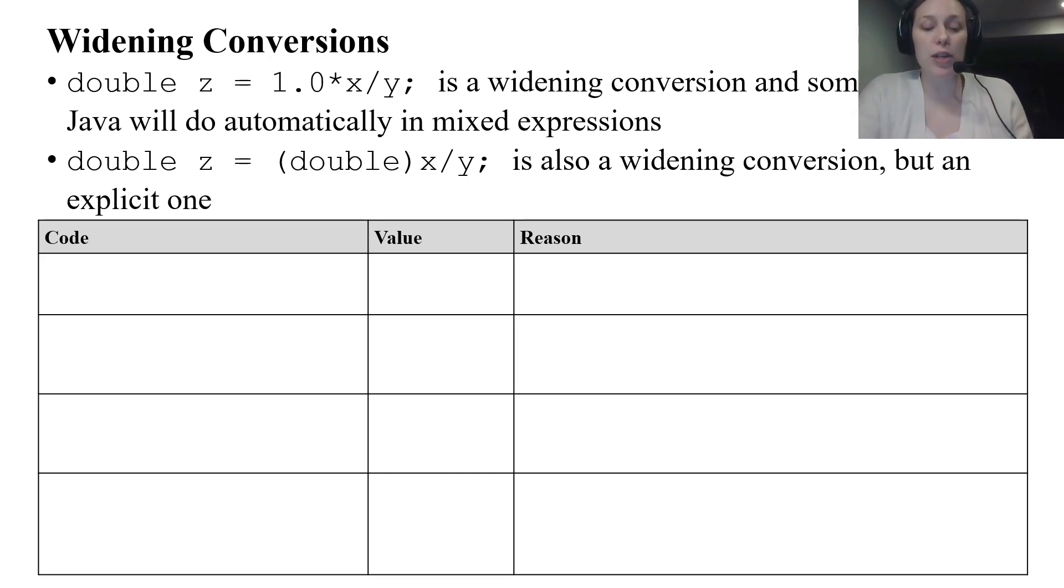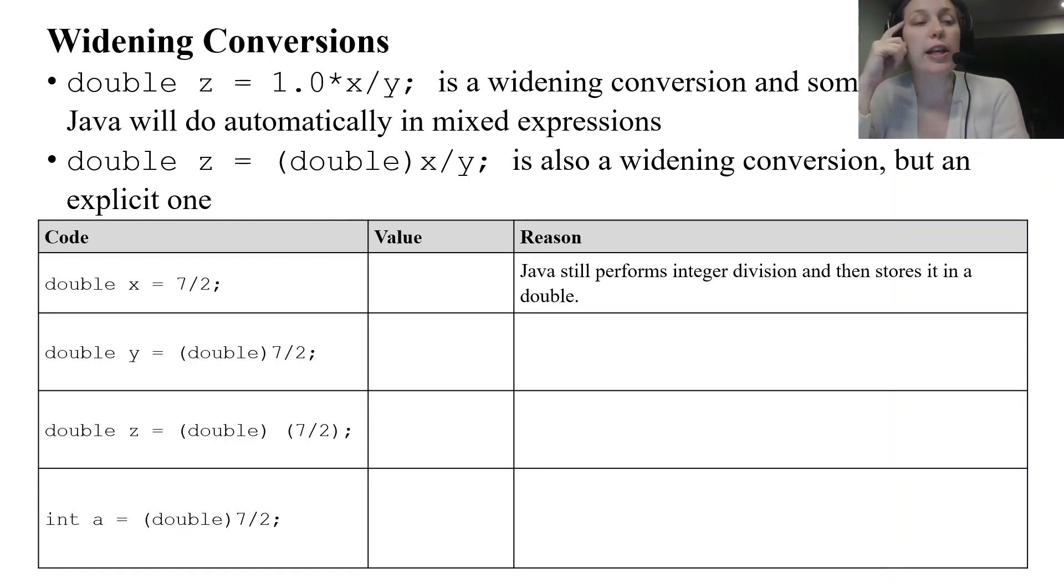So I have some code here of just different ways that casting is done. So let's take a look at this first one: double X equals 7 divided by 2. So 7 divided by 2 is still integer division. It doesn't matter what X is supposed to, what container X is in right now. 7 divided by 2, so Java still performs integer division and then stores it in a double. So 7 divided by 2 as integer division is going to be 3. 2 goes into 6, 3 times with a remainder of 1. So 3 is going to be our value. Because it gets stored in a double it's 3.0.